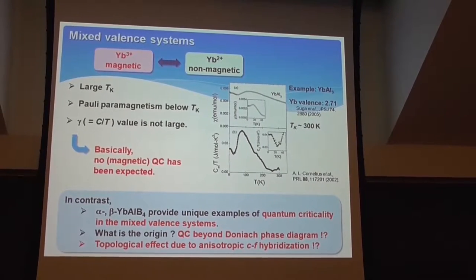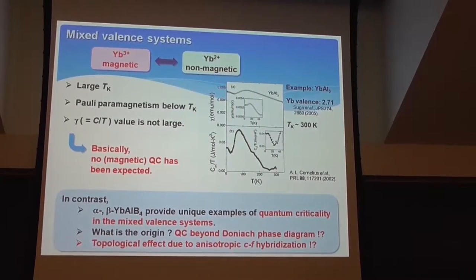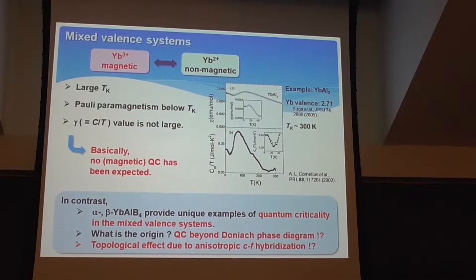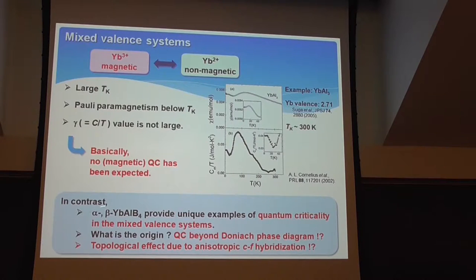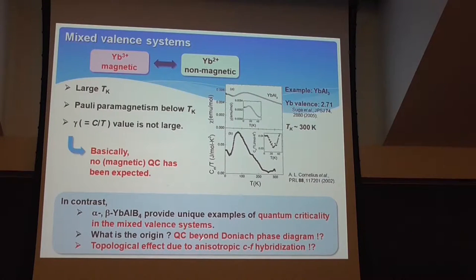Therefore, if we find something very interesting — quantum criticality in the mixed-valence systems — it should be arising from something beyond the Doniach phase diagram, which is the case in the alpha and beta YbAlB4. I'm going to further discuss the possible topological effects arising from the anisotropic CF hybridization.